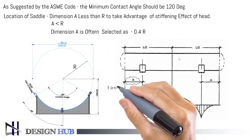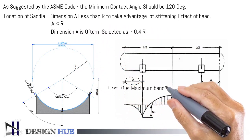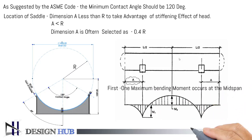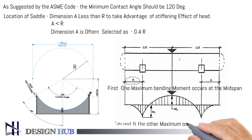Two maximum bending moments are induced in the vessel: the first one at the mid-span of the vessel, and the second at both the supports.